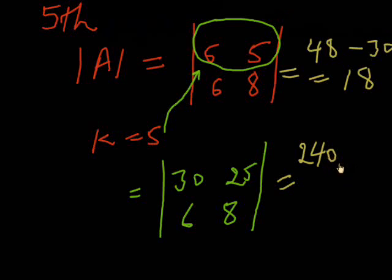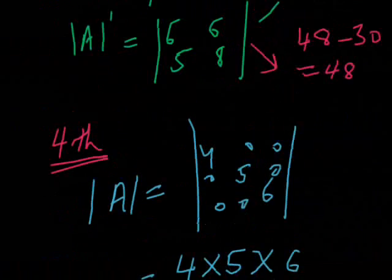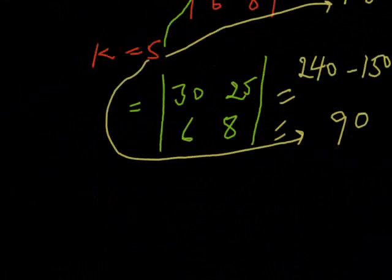equals 240, minus 25 times 6 equals 150, giving us 90. If we multiply 5 with 18, it equals 90, verifying the property. These are the properties. Thank you very much.